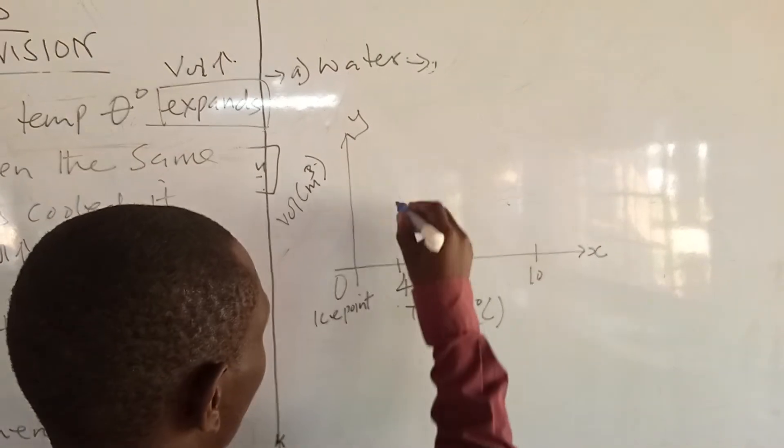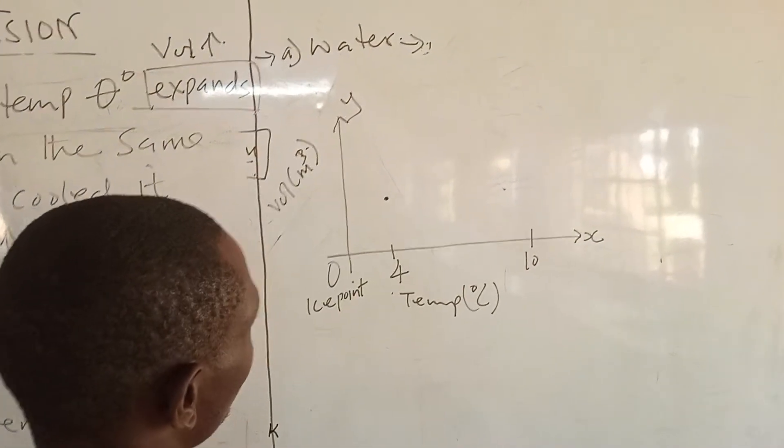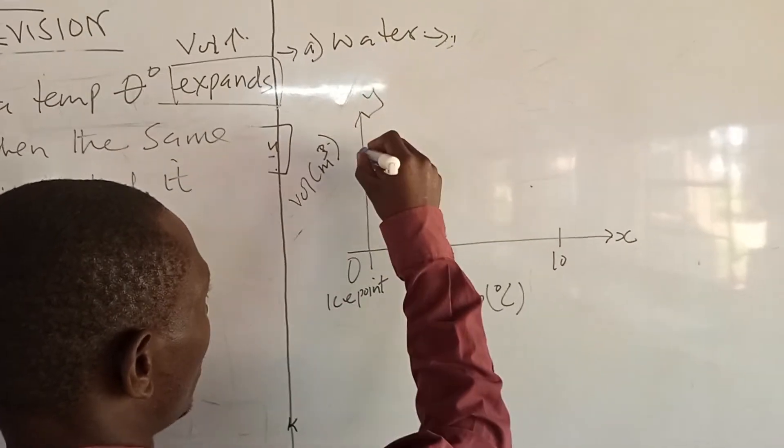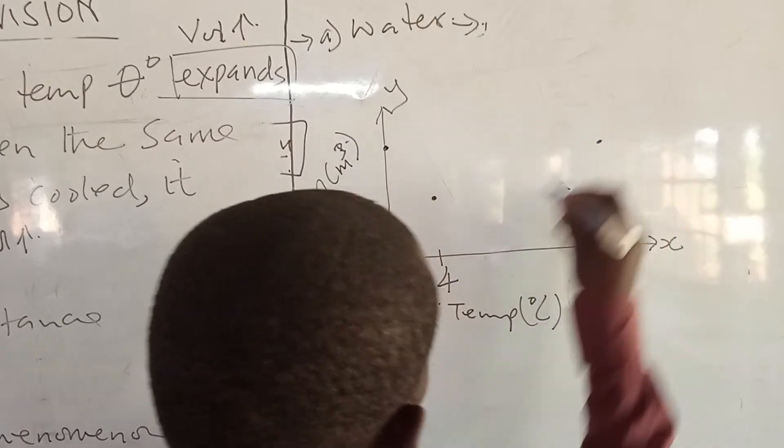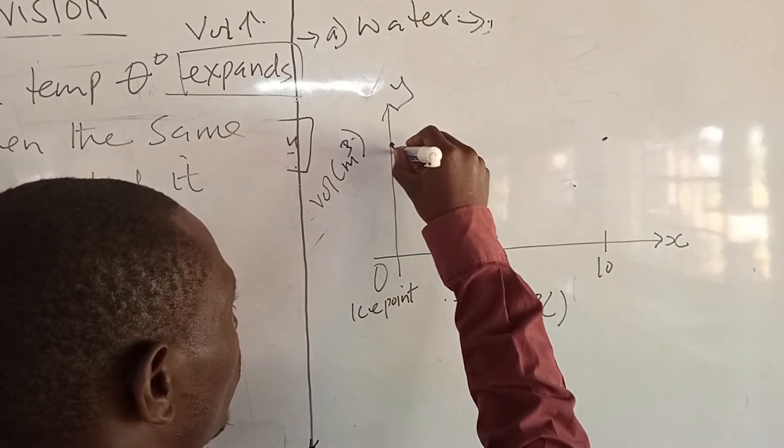Now, when I say the volume of water at 4 degrees is low, and at 0 and 10, it is a bit high, such that the graph will look like this.